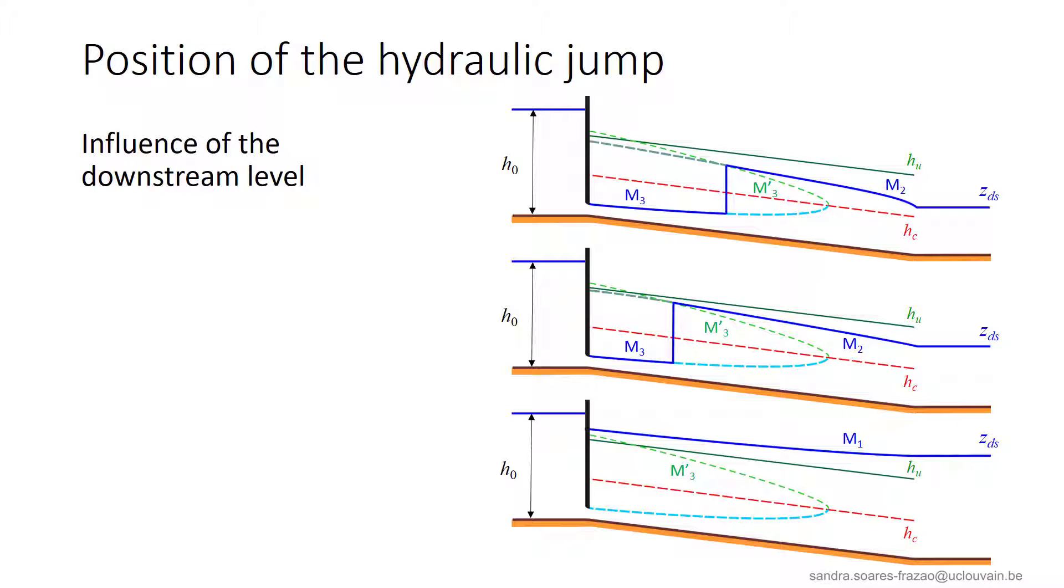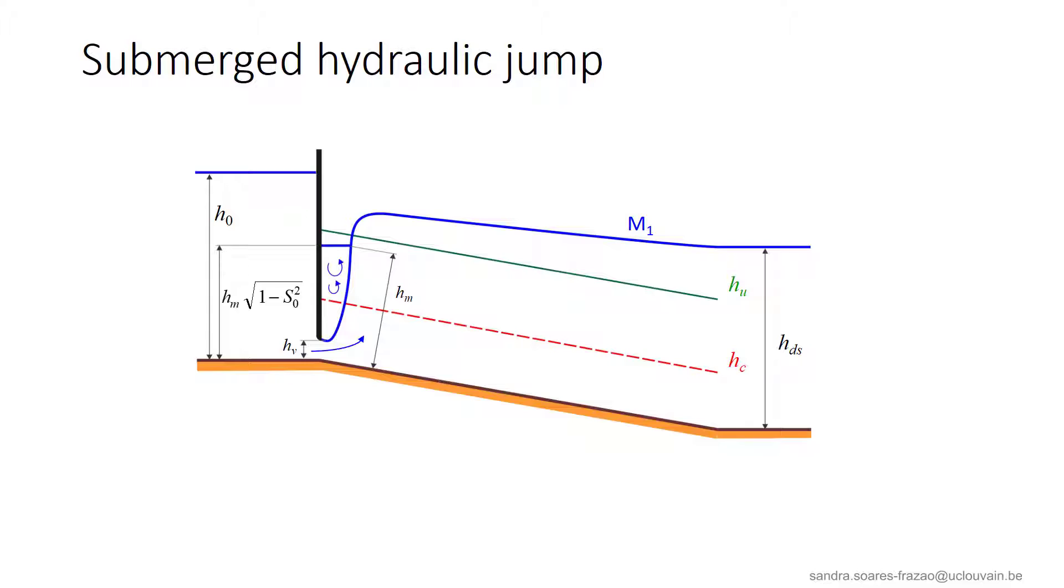In such a situation, the flow under the gate is submerged. And when the flow under the gate is submerged, instead of a classical hydraulic jump, we observe the formation of a submerged jump that will be directly linked to the downstream water profile.